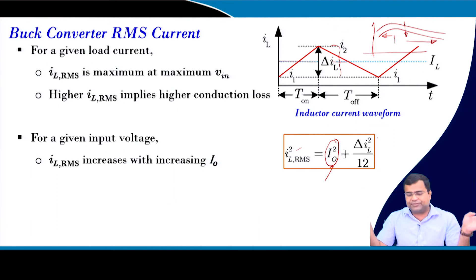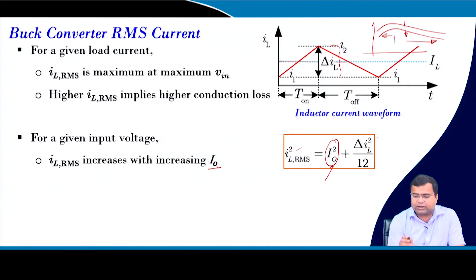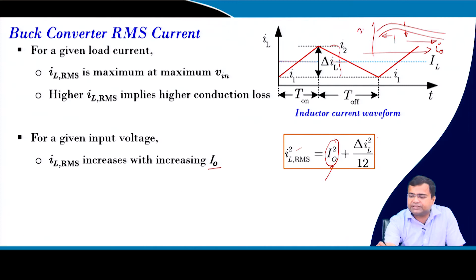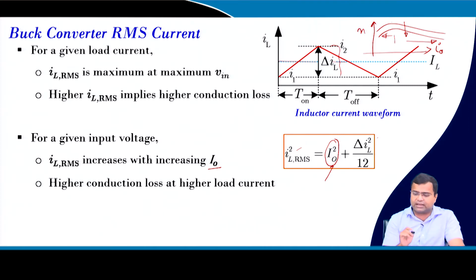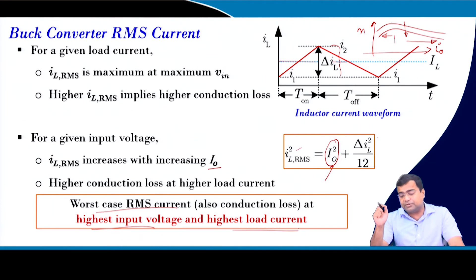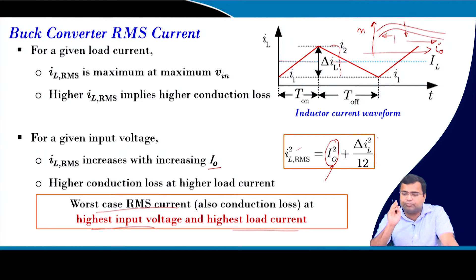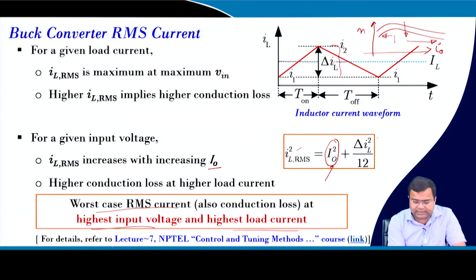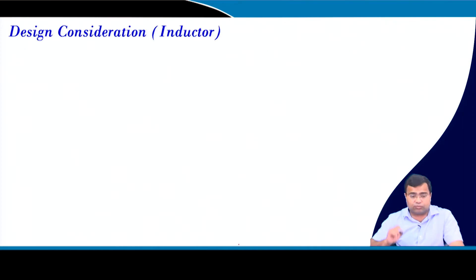On the efficiency versus load current curve, the right side is dominated by conduction loss as load current increases. The worst-case condition is highest input voltage and highest load current, where converter efficiency is lowest. That critical condition must still meet certain efficiency requirements, as discussed in lecture 7 of the earlier NPTEL course.